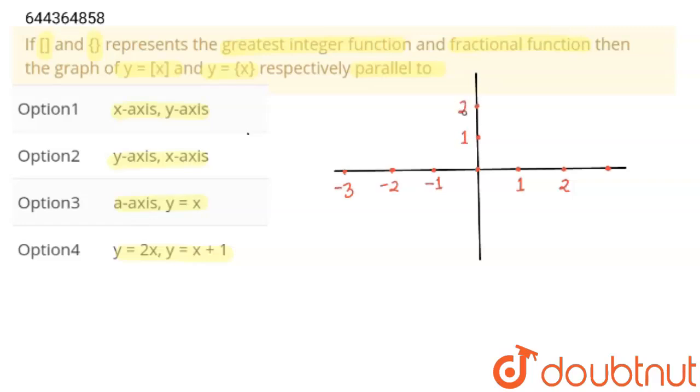If we take any number between 0 to 1, the graph of greatest integer x is this one and open at 1. And between 1 to 2, this graph is this line. Let me draw this graph by some other color. So I am drawing this graph by blue color. Here it is open bracket.